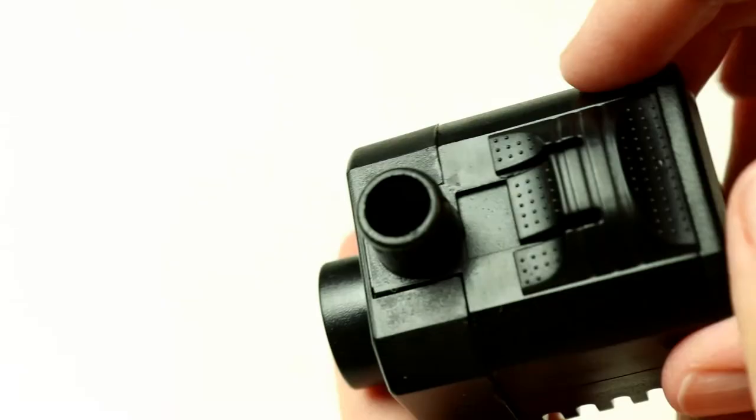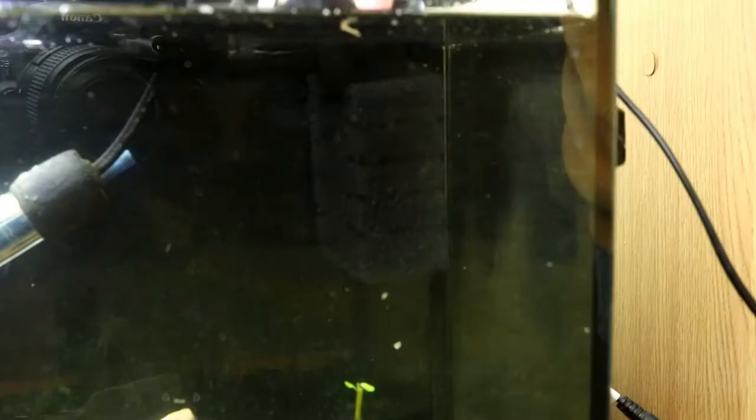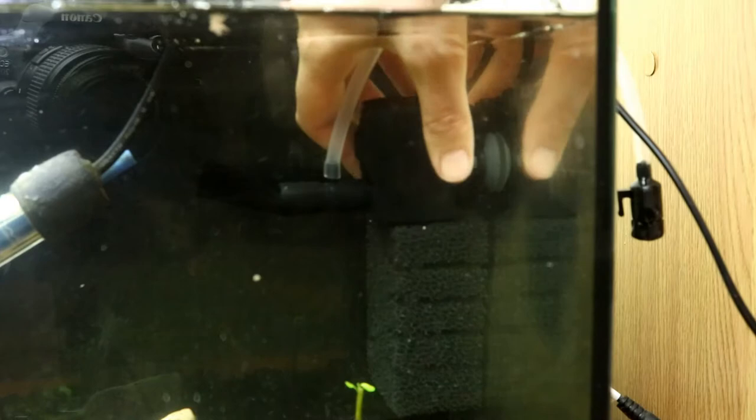You can also adjust the flow of the water using the regulator which is just above the outlet. And the whole unit attaches easily to the side of your tank using either the hook or the suction pads which I personally found perfectly adequate for keeping the filter in place.